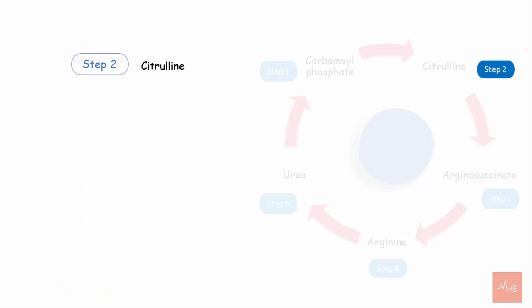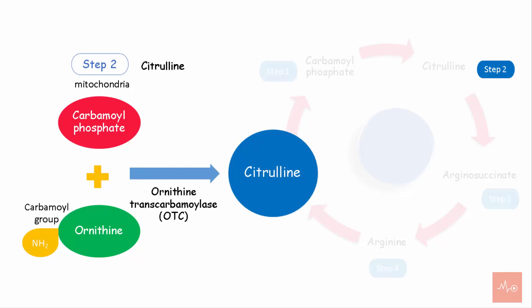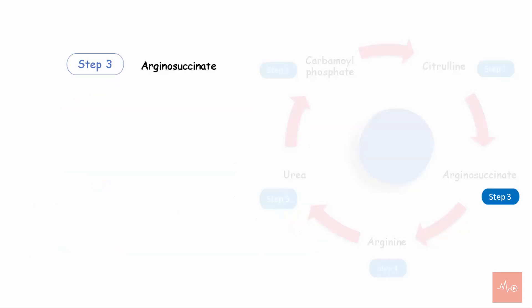Step 2 involves formation of citrulline. This reaction also takes place in the mitochondria. In this step, the carbamoyl phosphate reacts with ornithine, and the carbamoyl group is transferred to the NH2 group of ornithine to form citrulline. This reaction is catalyzed by ornithine transcarbamoylase, or OTC enzyme. Citrulline now leaves the mitochondria and enters the cytoplasm.